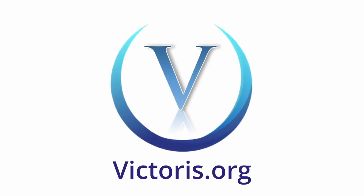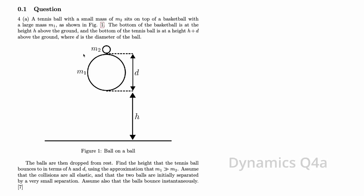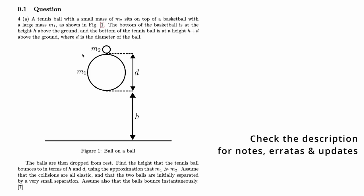The following content is supported by Victoris.org. Hey guys, Chen Ha over here and today let's solve this question where a tennis ball and a basketball fall down together.